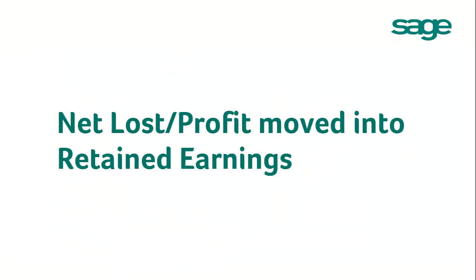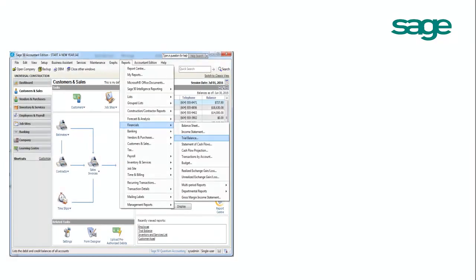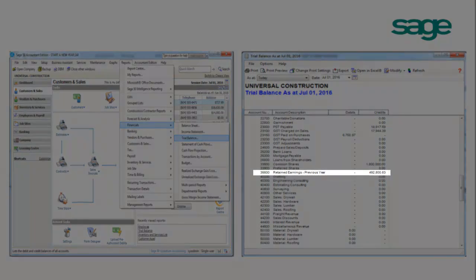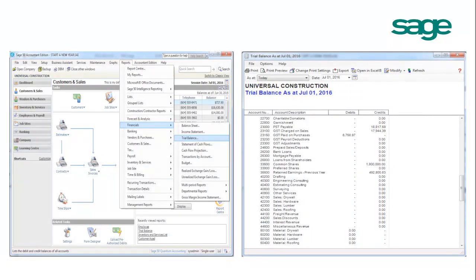SAGE 50 Canadian Edition has automatically moved your net loss or profit into retained earnings. You can verify this by going to Reports, Financials, Trial Balance, and have a look at your retained earnings account.